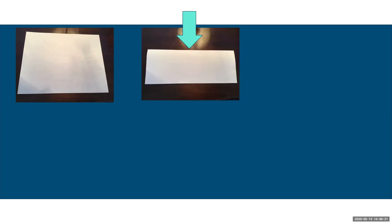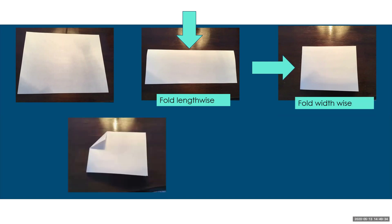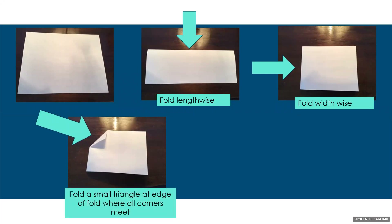So you might be wondering how you might build some Frayer Models at home. It's pretty easy to do — all you need is a sheet of blank paper, and this is a small arts and crafts project you can do with your kids right at home. We start with our sheet of blank paper. The first thing we do is fold it in half lengthwise, then we fold it again widthwise, so now the paper is about one-fourth the size of when we started.